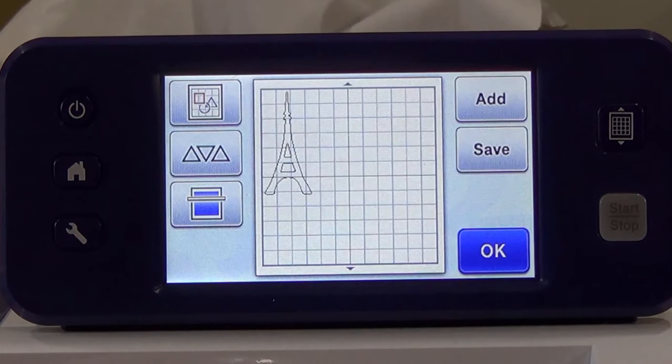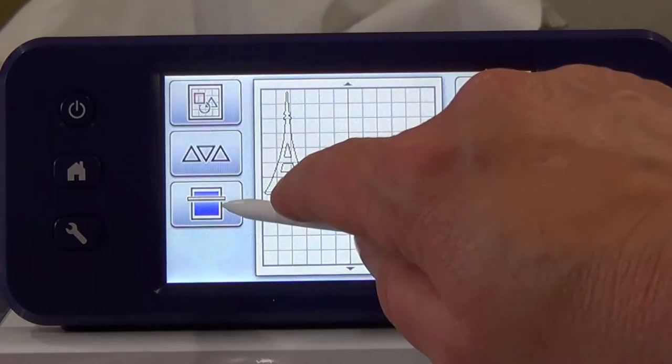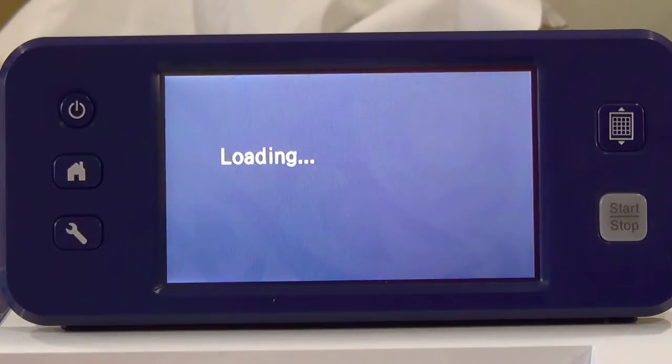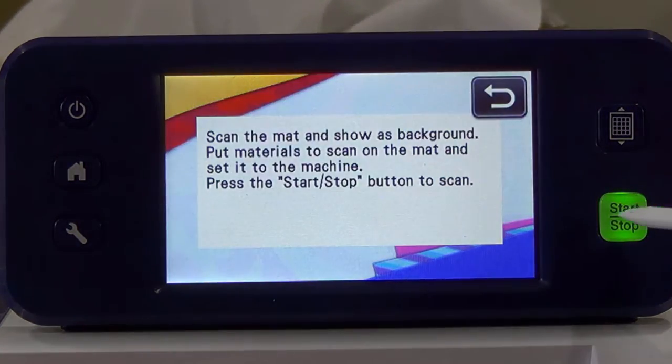Position your fabric on your Scan and Cut mat. Press the Matte Scan button to see where your fabric is positioned. Load the mat and press Start.